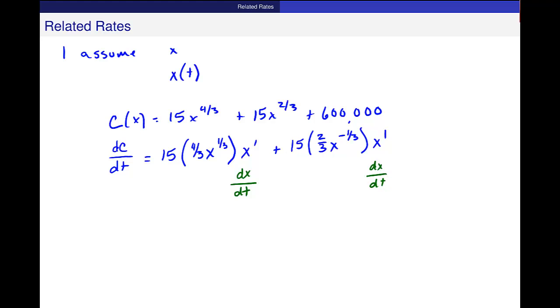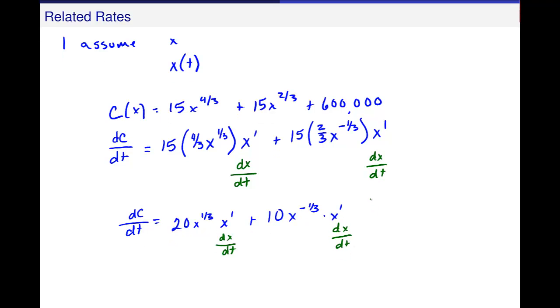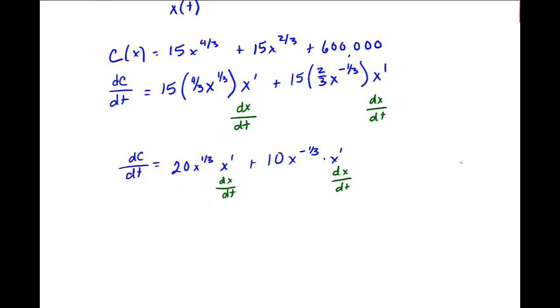So let's see. Let me just simplify this if I can. 15 times 4 thirds is 20x to the 1 third, or cube root of x, times x prime. And that's how cost is changing with relation to time. Plus 15 times 2 thirds is 10, x to the minus 1 third, times x prime. And again, I'll remind you, this is dx dt if you want to use that notation instead.